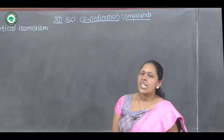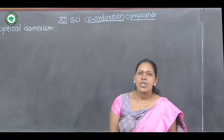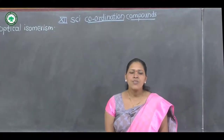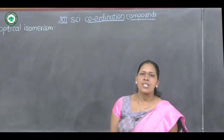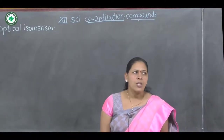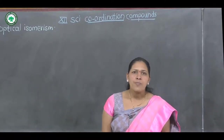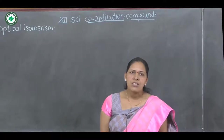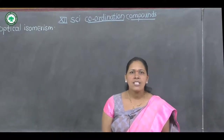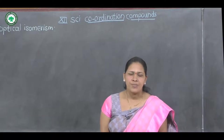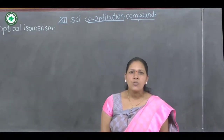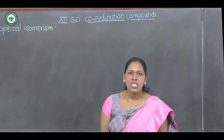The second type of stereo isomers in coordination compounds is optical isomerism. A complex molecule or ion that has non-superimposable mirror images is called an optical isomer, also known as an enantiomer. Enantiomers have non-superimposable mirror images of each other.